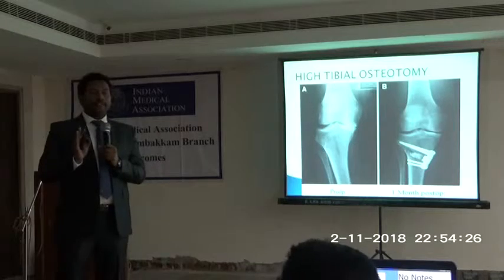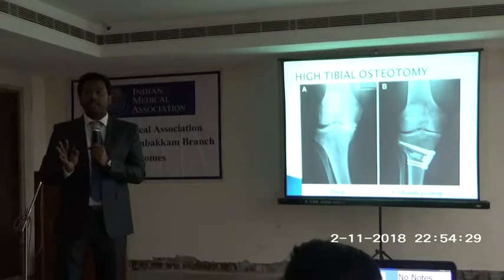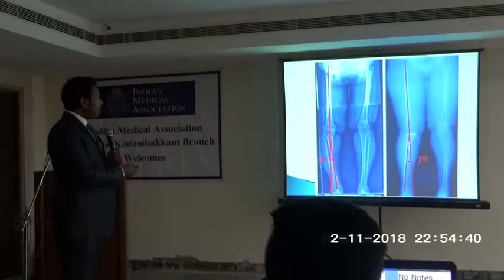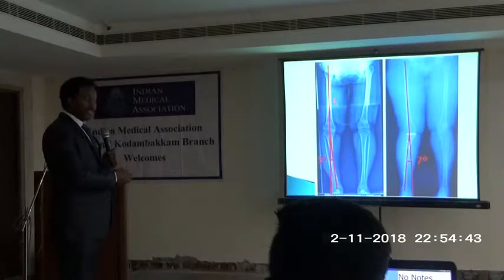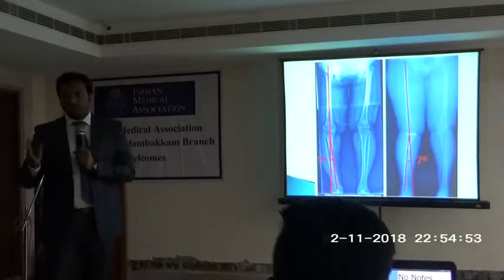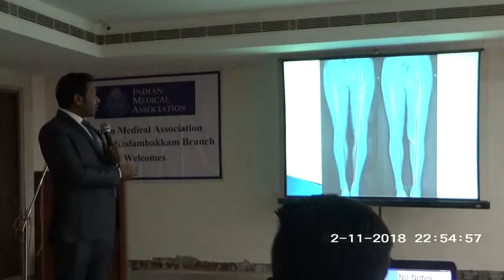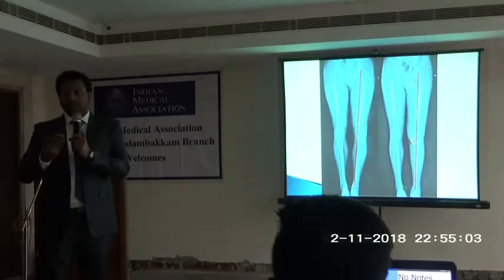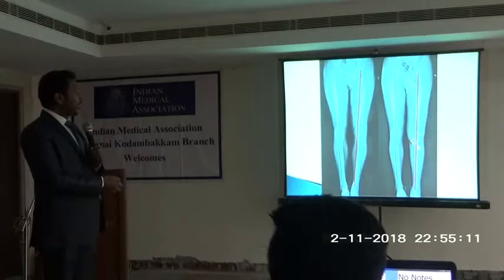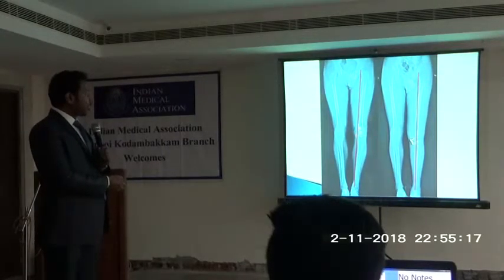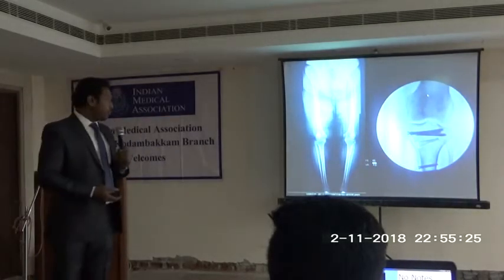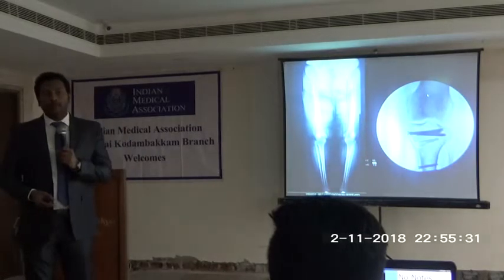I have been speaking about medial compartmental OA, which is very common. The surgical option for this is high tibial osteotomy. The preoperative picture shows severe medial compartmental arthritis with the weight-bearing long axis of the lower limb passing through the center. We want to shift it to the lateral side where there is good cartilage available. We create a wedge, open out the tibia, create a controlled fracture, and realign the mechanical axis from medial to lateral. I operated this procedure just two days back.